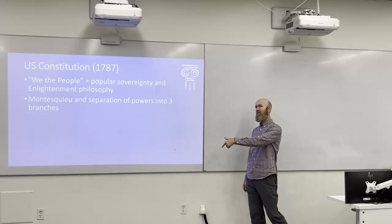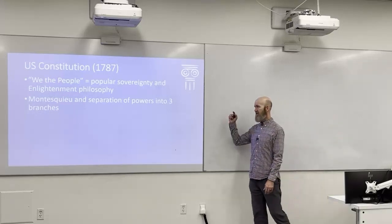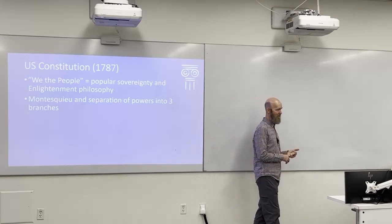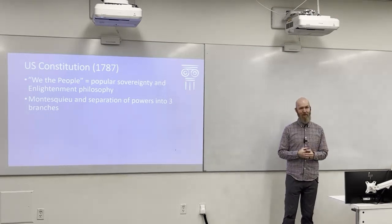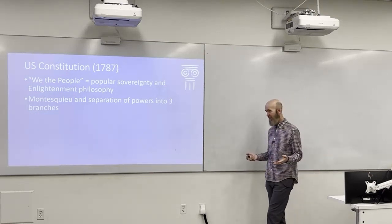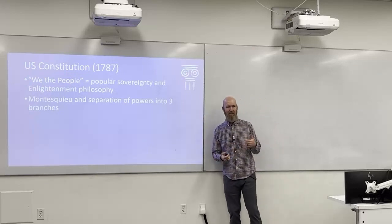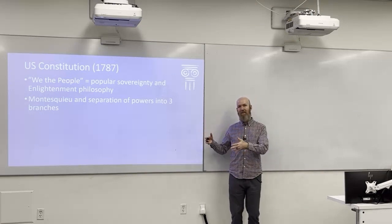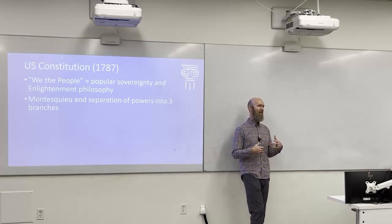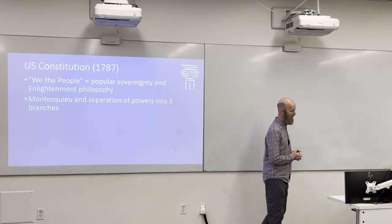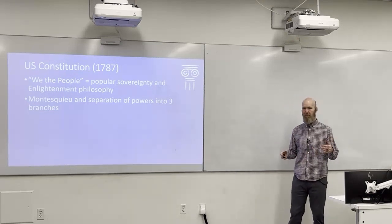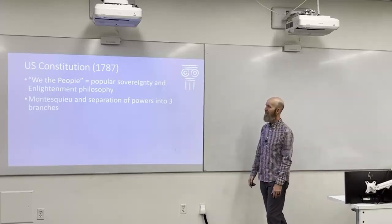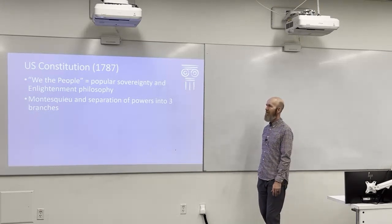The articles of the Constitution are ordered by importance. Article One covers the legislative branch, Article Two the executive branch, and Article Three the judicial branch — starting with what the founders considered most powerful and important. They do ask questions like 'Article Two of the U.S. Constitution is about what?' — it's the executive branch. Article Three is about the judicial branch. And the preamble — 'We the People of the United States' — represents popular sovereignty.